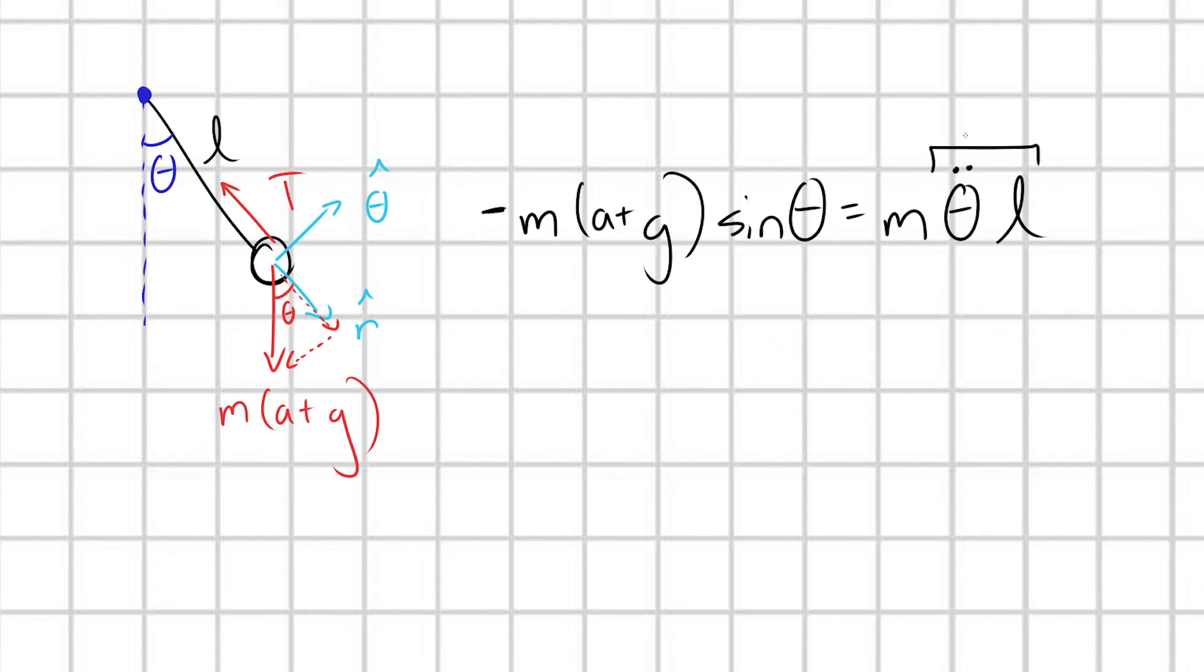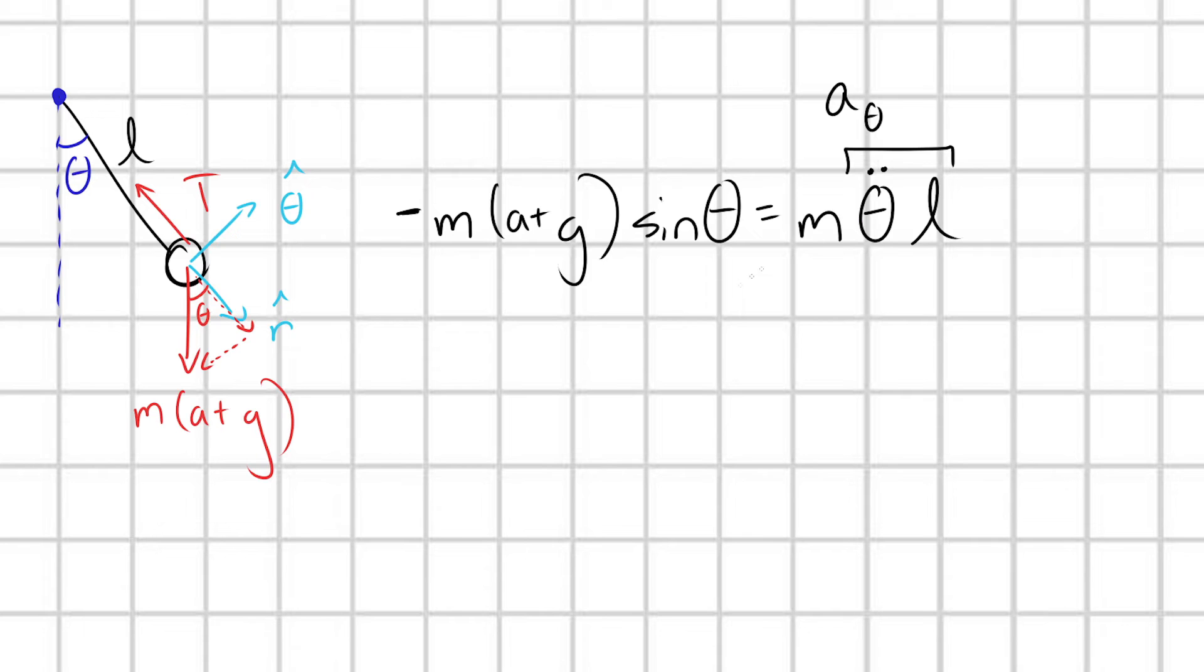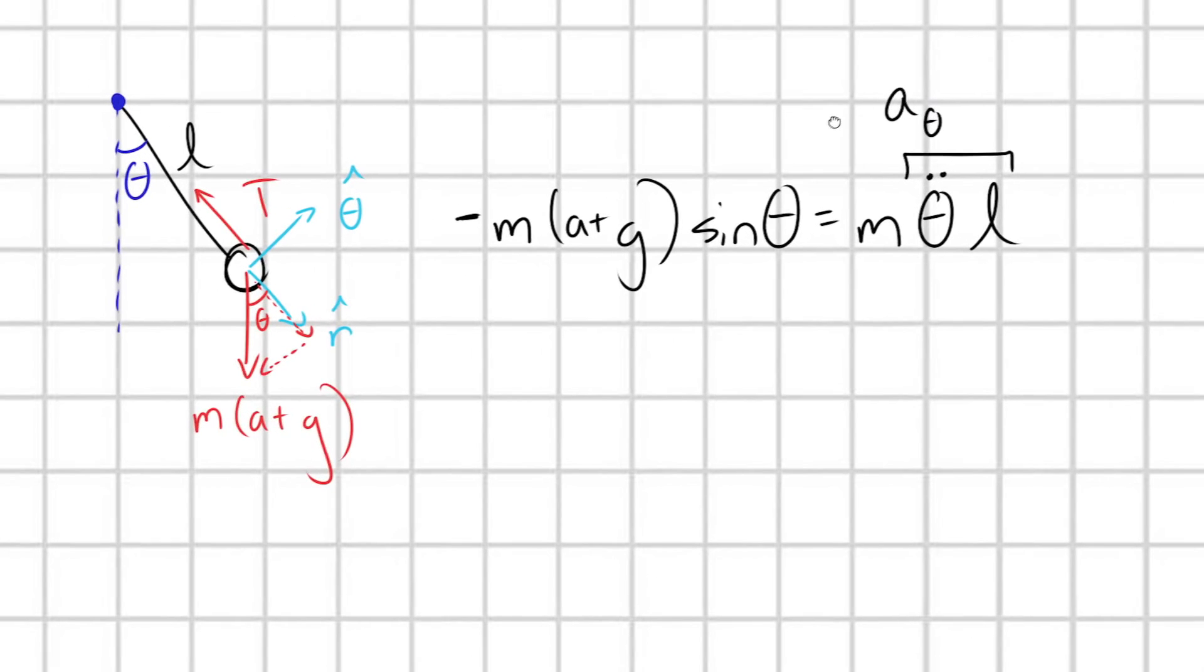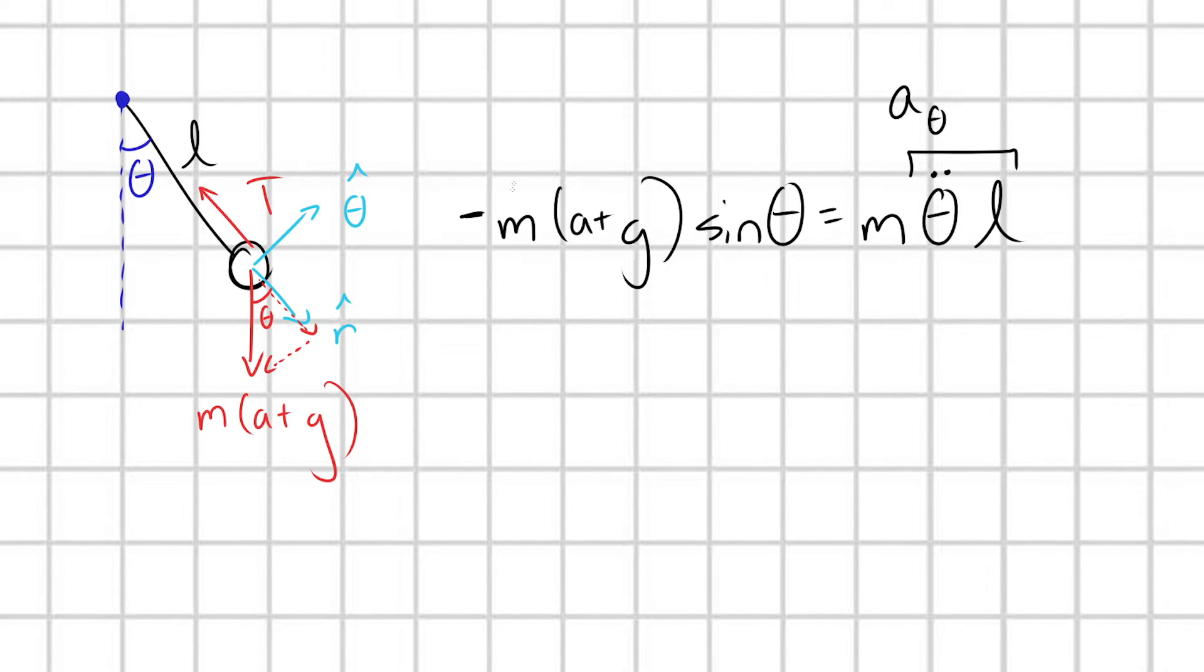All right, this is the form of your acceleration in the theta hat direction. When you have a situation where your object is not moving inwards or outwards, not moving radially, if you take your object's angular acceleration times the distance away from the pivot point that it's rotating around, that's going to tell you the acceleration in the theta hat direction. But from here, we can go ahead and cancel out our M's and we're going to be left with the following differential equation.